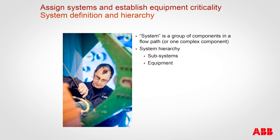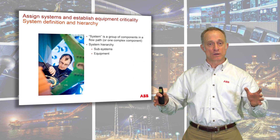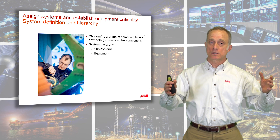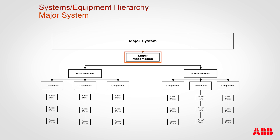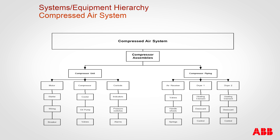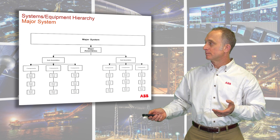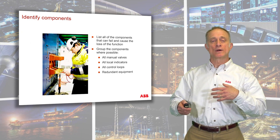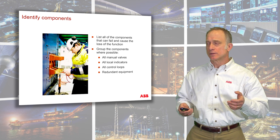Before we can assign criticality, we need to establish the systems. A system is a group of components in an equipment category — a piece of equipment and all its subcomponents, or it could be one singular complex piece of equipment. We'd have a major system with major assemblies, major sub-assemblies, components, and we get down to a part level. For example, a compressed air system would have compressor assemblies, compressor units, and each compressor unit would have a motor, a compressor, and controls — and then you get down to a parts level.